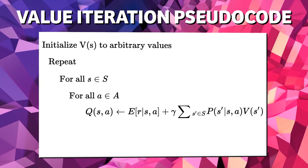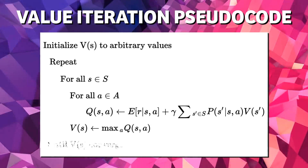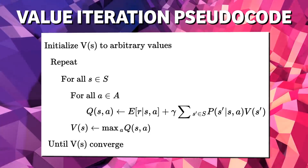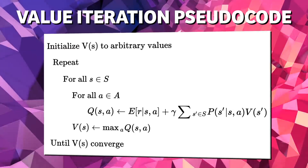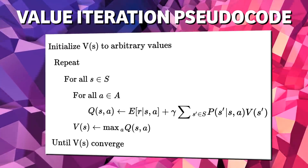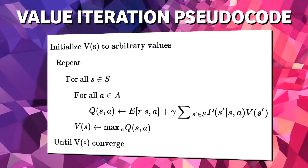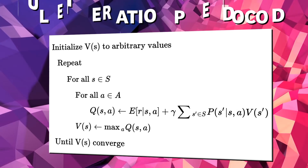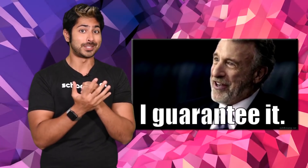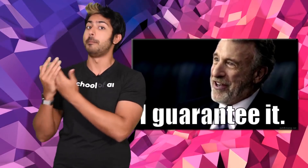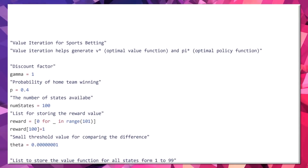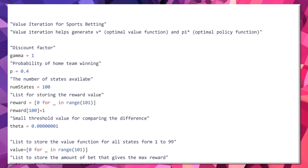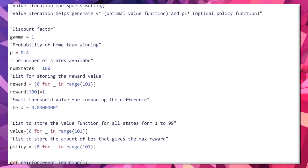In the value iteration algorithm, we iteratively apply the Bellman equation to compute the optimal value function. From a given state there are many possible actions, so we accumulate the expected values for each action and assign the state's value to that of the action which returned the highest value. We've essentially taken the Bellman equation and turned it into an update rule. The algorithm initializes V(S) with arbitrary random values, then repeatedly updates the state-action pair Q and the V(S) values until they converge. Value iteration is guaranteed to converge on the optimal values. Guaranteed sounds pretty great, especially when money is involved.